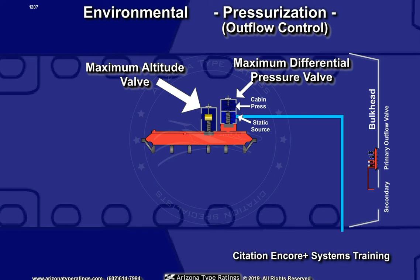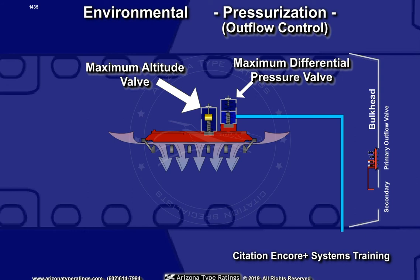If the cabin pressure differential approaches 8.9 psi, that differential is adequate to compress the spring in the relief valve. That on-seats a valve which opens an orifice in the control chamber, venting control pressure from the diaphragm overboard. As a result, the diaphragm deflates away from the outflow grille, allowing more air to escape, lowering the pressure differential.